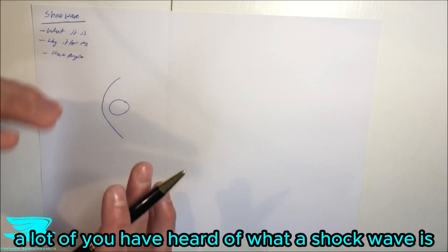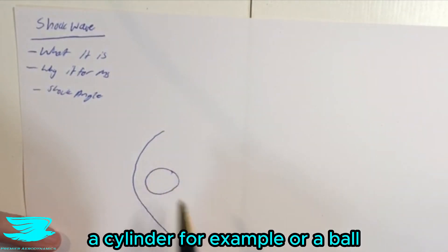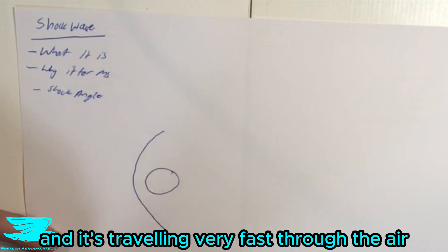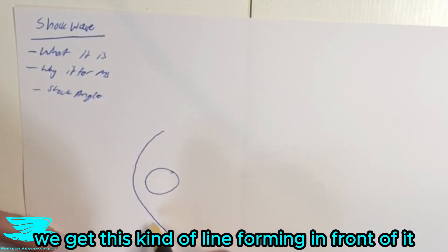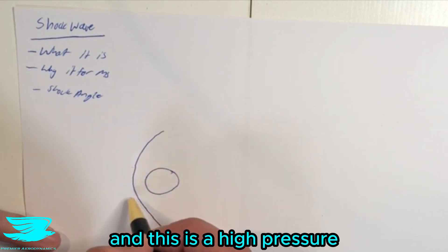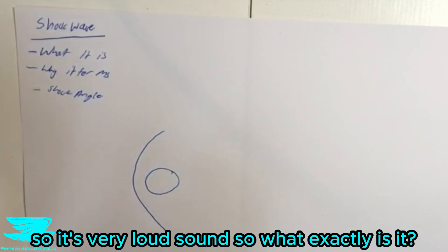I'm sure a lot of you have heard of what a shockwave is. Generally speaking, we have an object, a cylinder or a ball, and it's traveling very fast through the air. Then we get this kind of line forming in front of it. This is a high pressure face up front and we also get a sonic boom, a very loud sound. So what exactly is it?